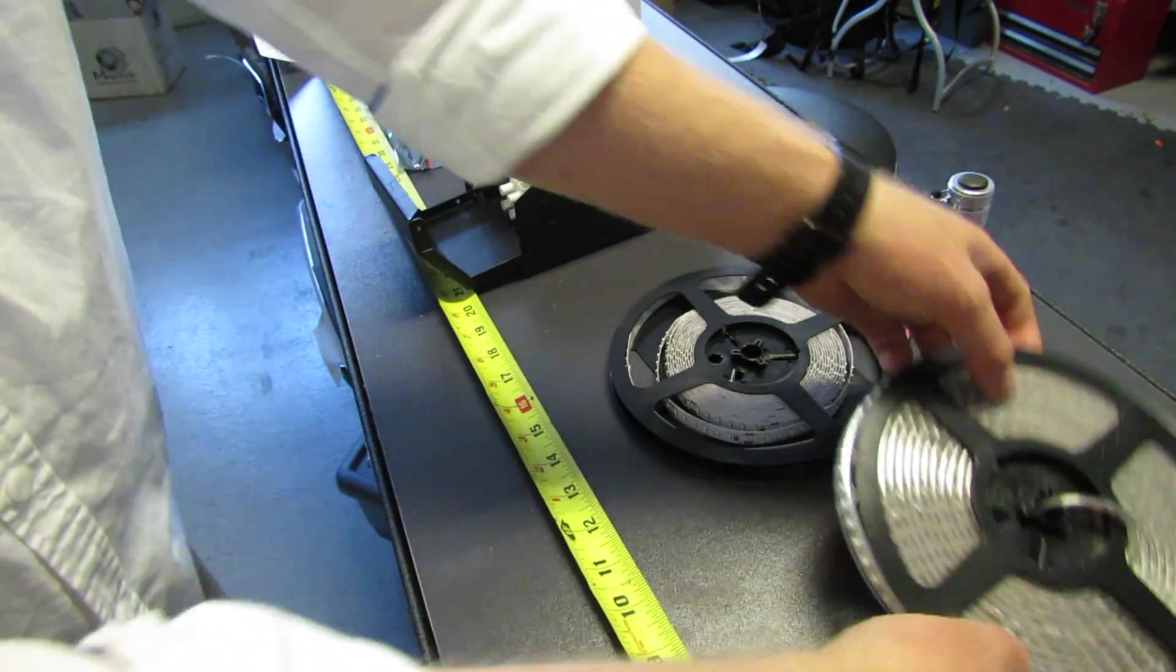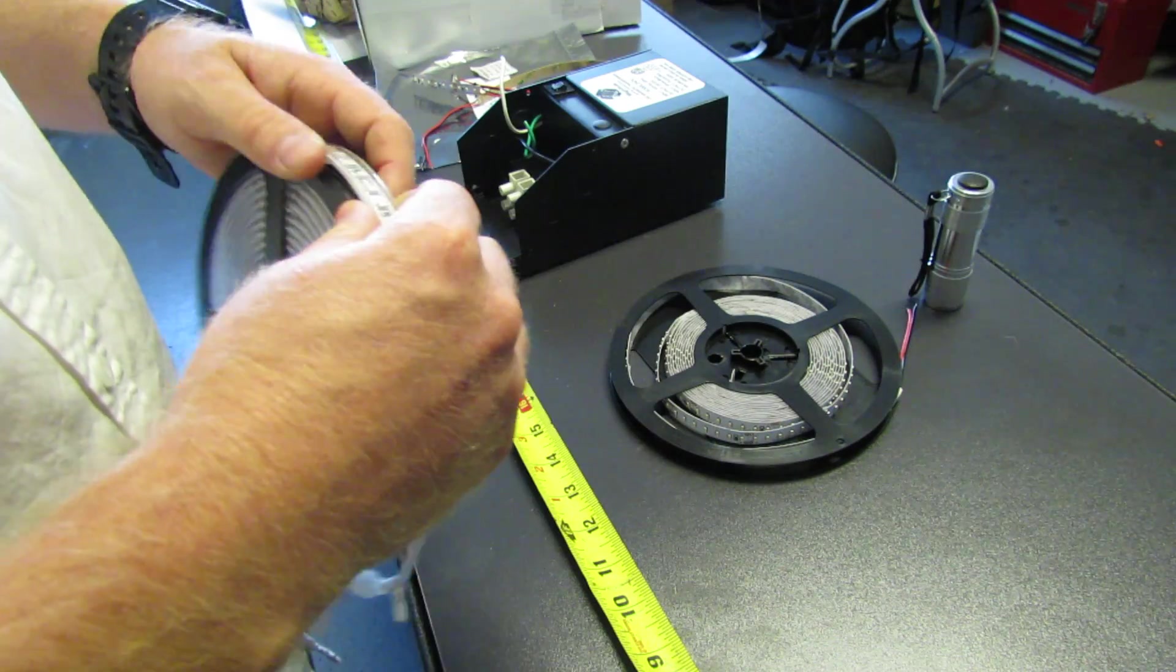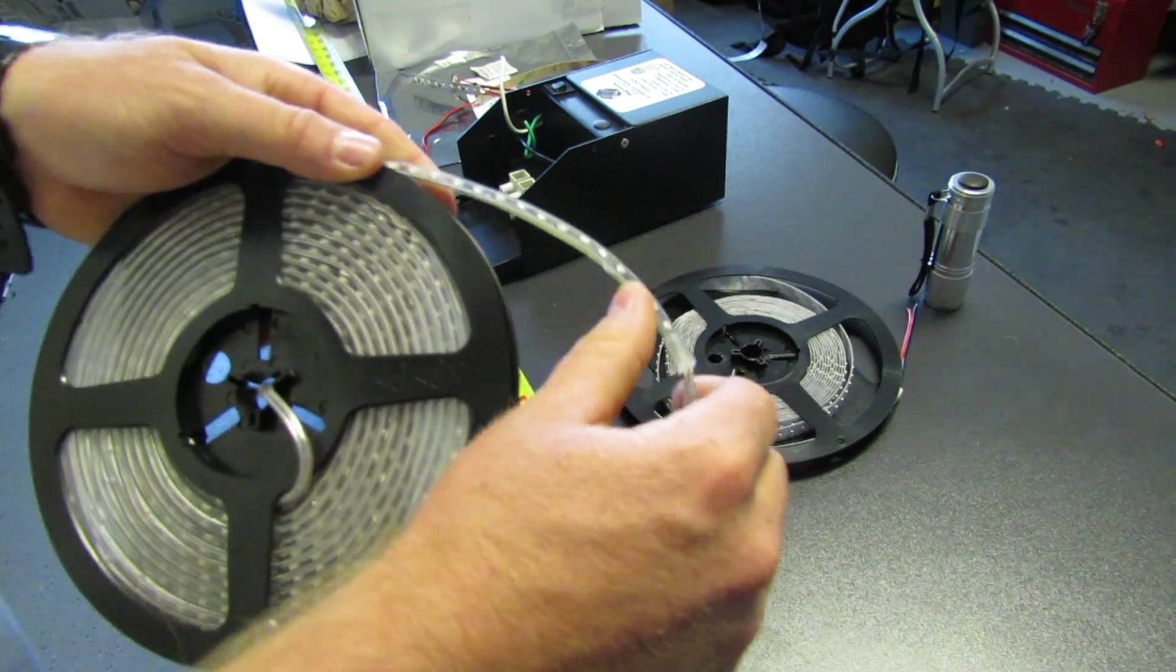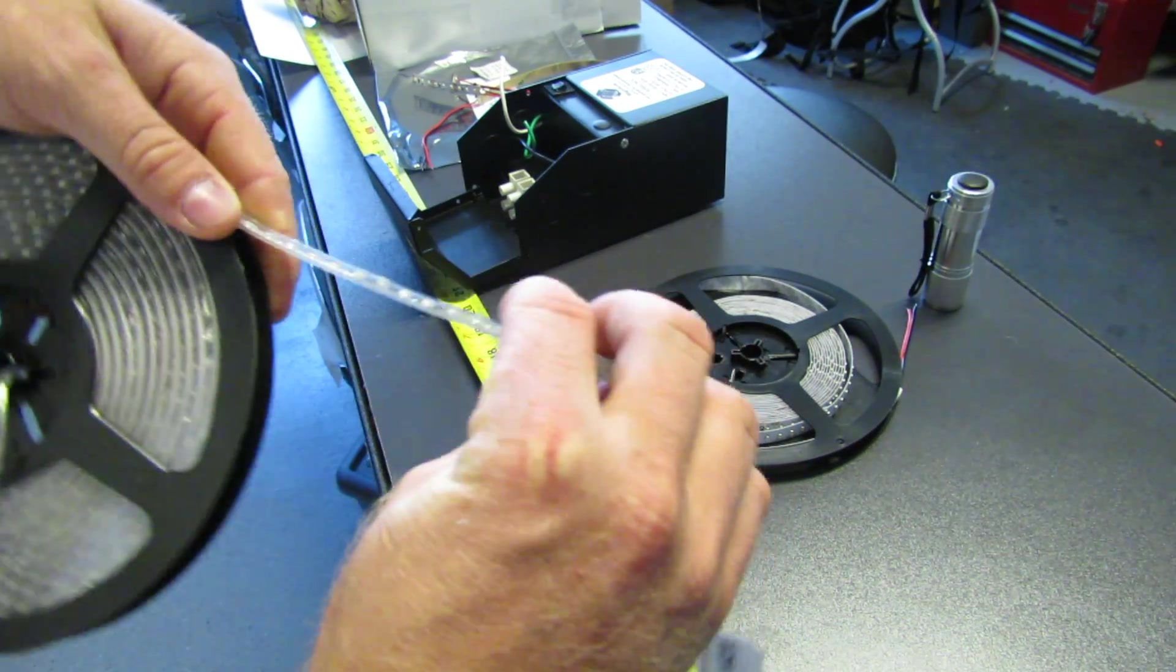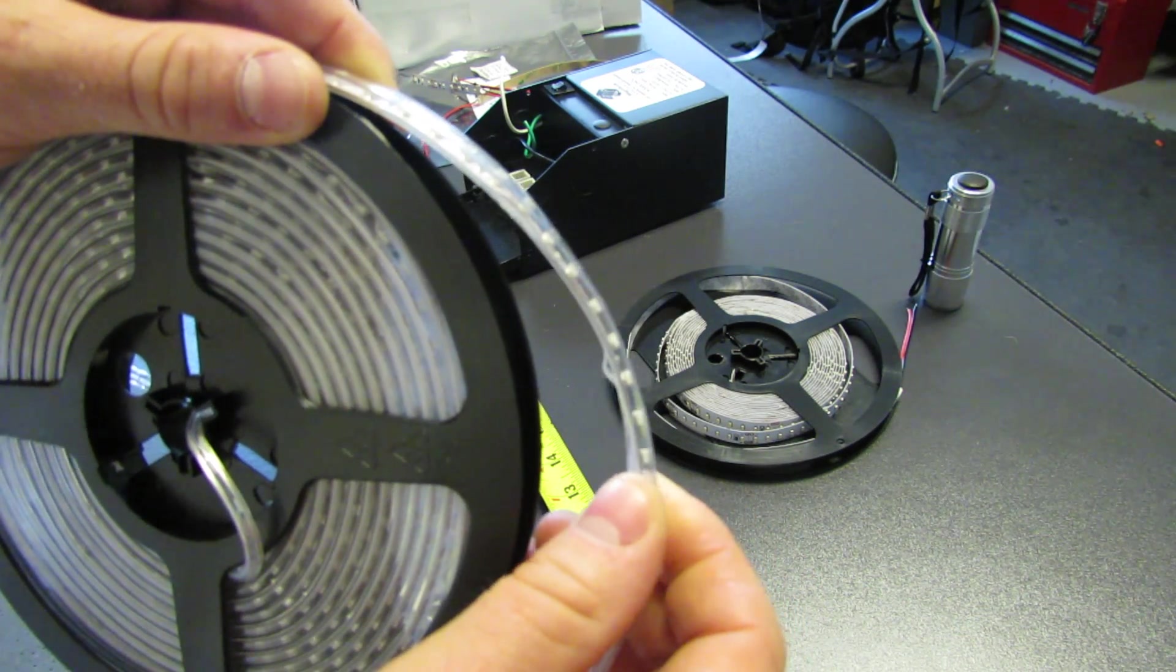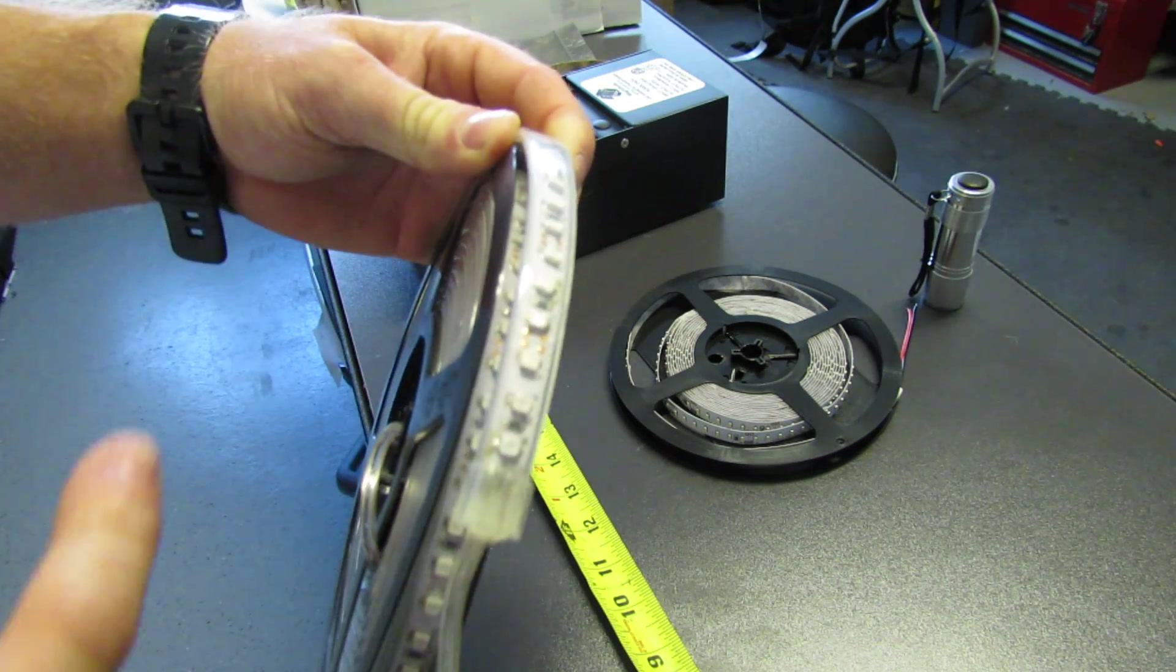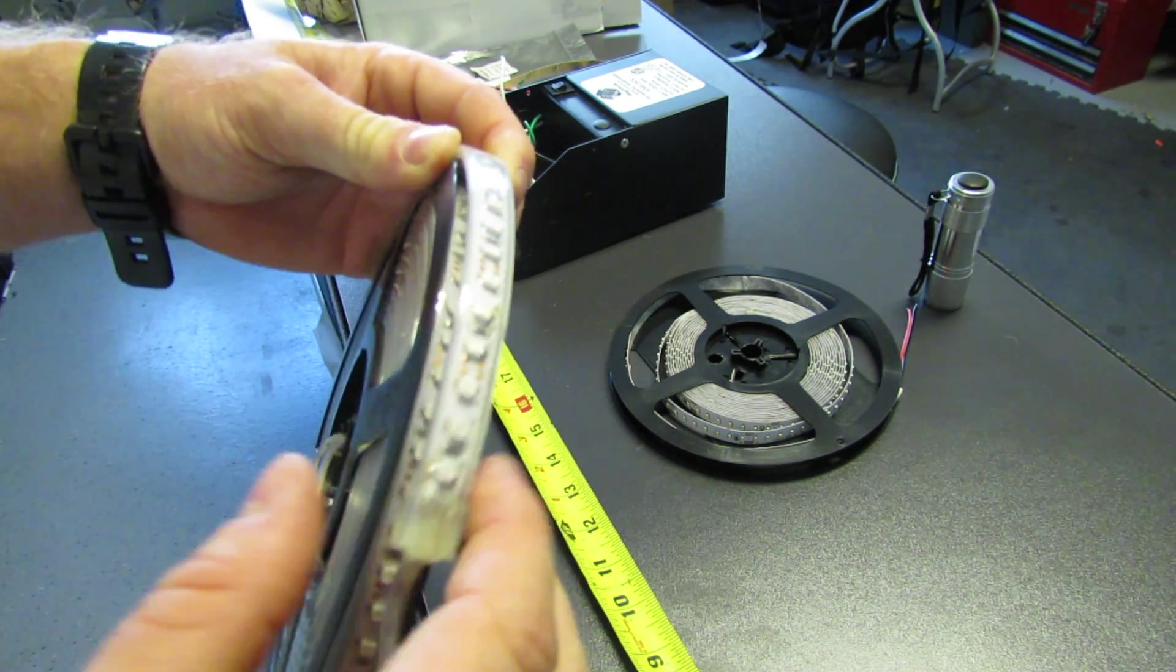Now the coating on it, this is not a, we don't have any in stock right now of the IP65 of the 24 volt, but this is the type of coating that comes on it. You can see it's still very flexible. I'll try and get it nice and close so you can see, but it's kind of tough. You can see that what this is, is basically a rectangular coating acting as a lens and a protector to the lights.